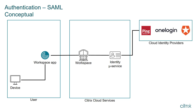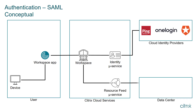Once the identity microservice acknowledges a successful authentication, Workspace requests a list of subscribed resources for the user by contacting the ResourceFeed microservice. The ResourceFeed microservice uses the Active Directory parameters included within the SAML assertion to check against the access control list associated with the Active Directory users and groups. Once complete, the user has access to any authorized resources within the Workspace.